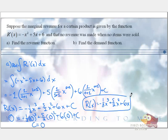So how do we do part B? Find the demand function. Revenue is price times number sold. So that implies that price, which is p equals the demand of the quantity - so that's our demand function - is the revenue divided by x.